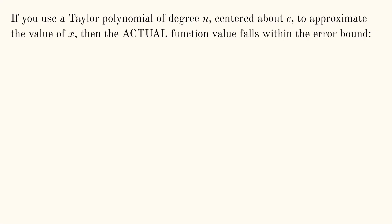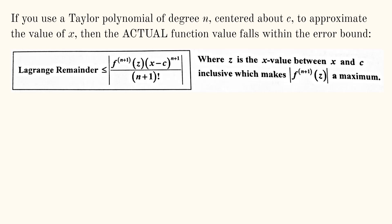If you use a Taylor polynomial of degree n, centered about c to approximate the value of x, then the actual function falls within the error bound. We have a formula for that. It looks kind of messy, but I'm going to hopefully explain how to use it.